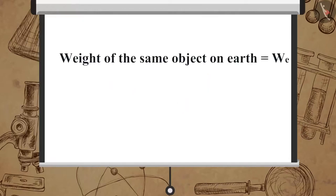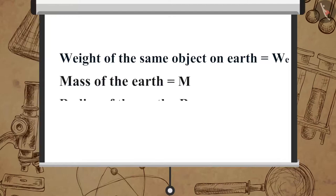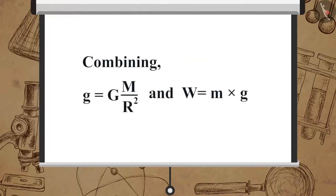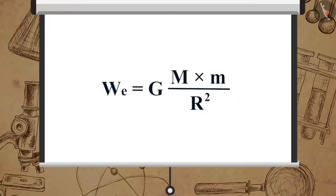Let the weight of the same object on Earth be W_e, the mass of the Earth be M, and its radius be R. Combining the equations g equal to G multiplied by M upon R squared and W equal to m multiplied by g, we get W_e equal to G multiplied by M multiplied by m upon R squared.